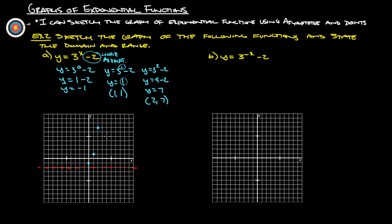This graph should look a little bit familiar because we just did this graph on the 8B notes on using a table. We know this is going to come down and get close to the asymptote but never hit it, so we draw the line and it comes up and goes like that.